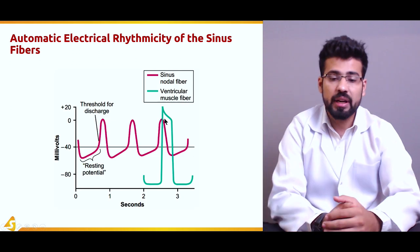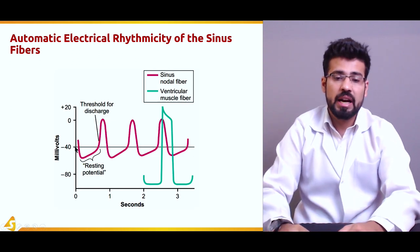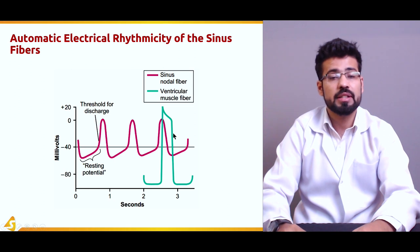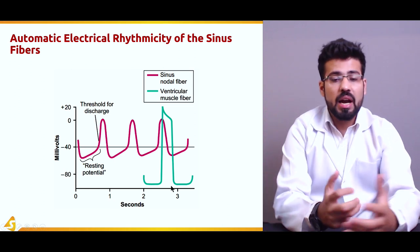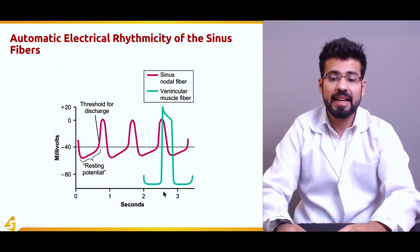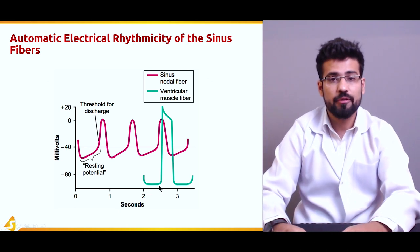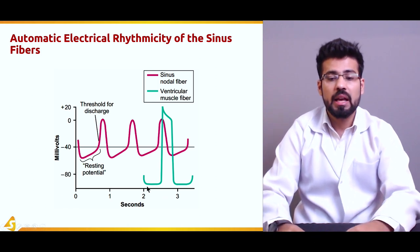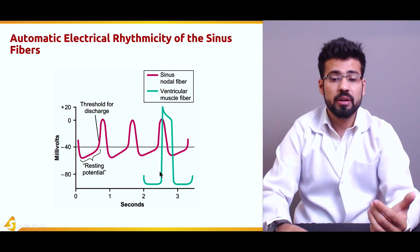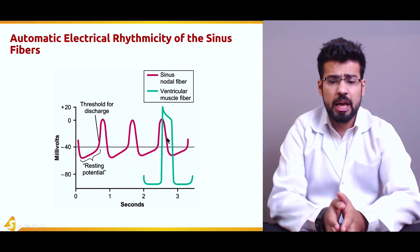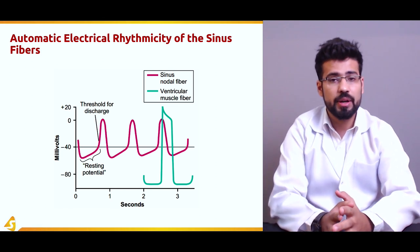All of these channels combined play a critical function in the excitation of both the sinoatrial node and the atria and ventricles. The sinus nodal fiber action potential is represented in red, and the ventricular muscle fiber action potential is shown in green. The ventricular muscle fiber has a resting membrane potential of about minus 90 millivolts, and it causes a rapid upward spike because of the opening of the voltage-gated sodium channels.